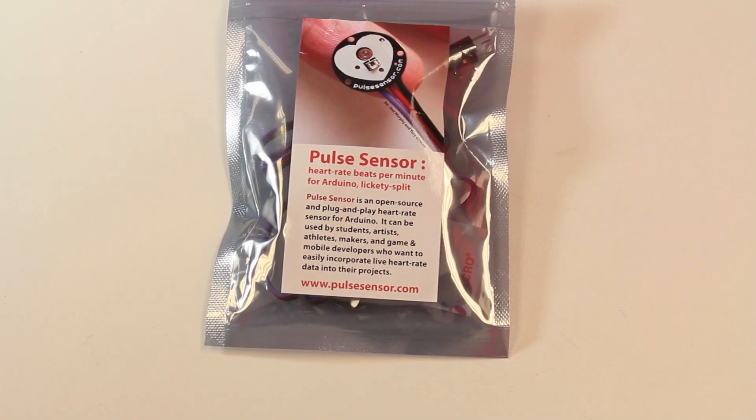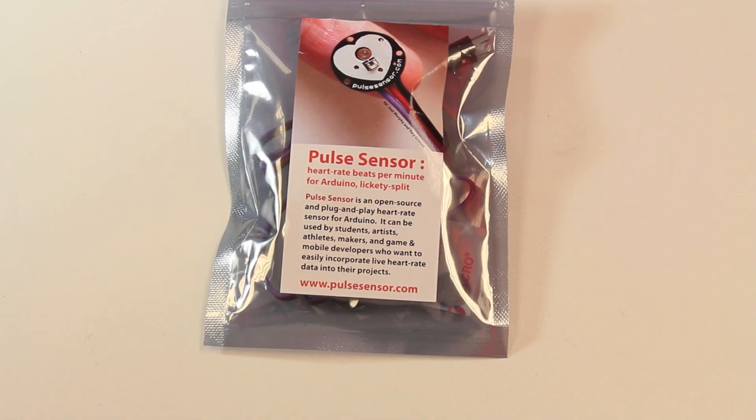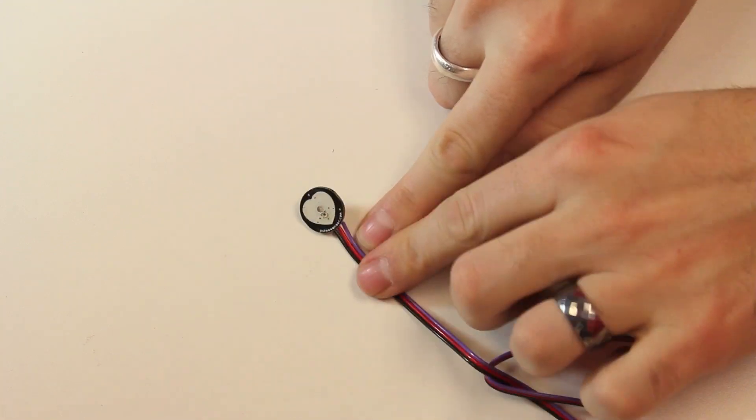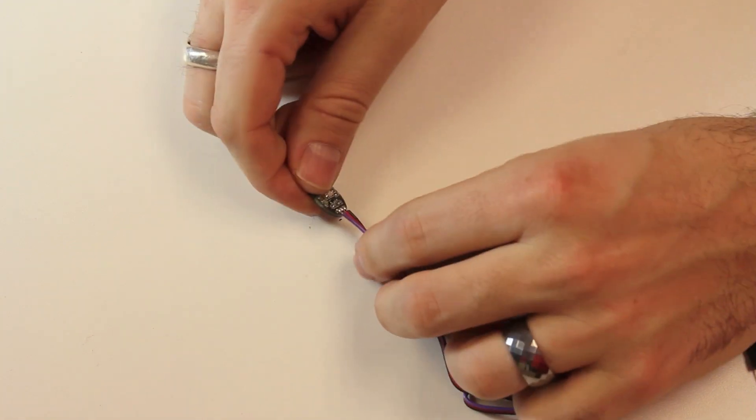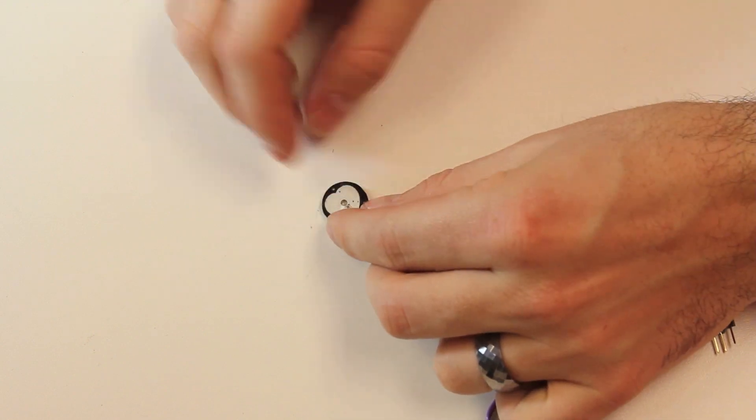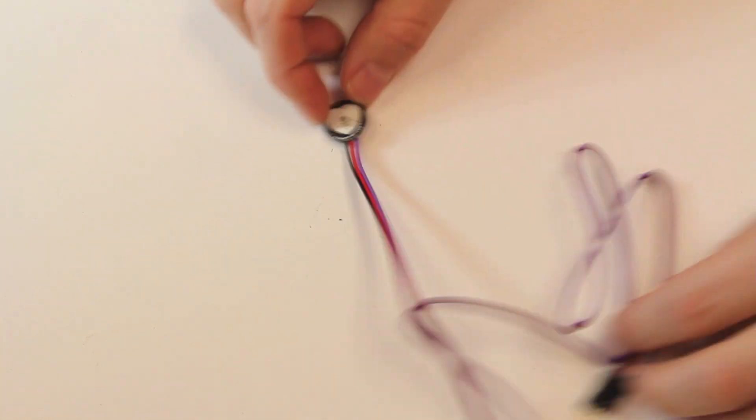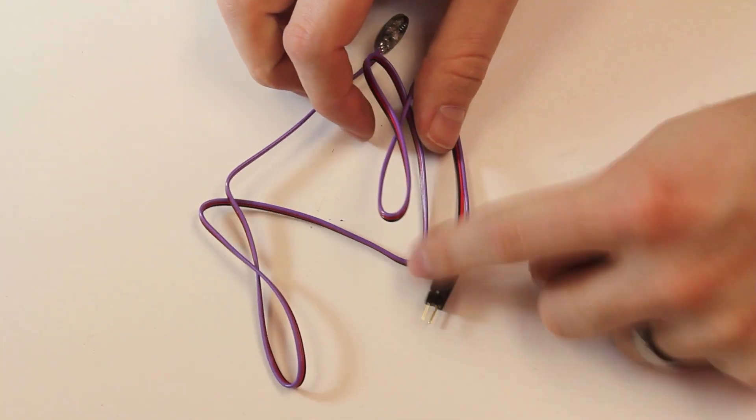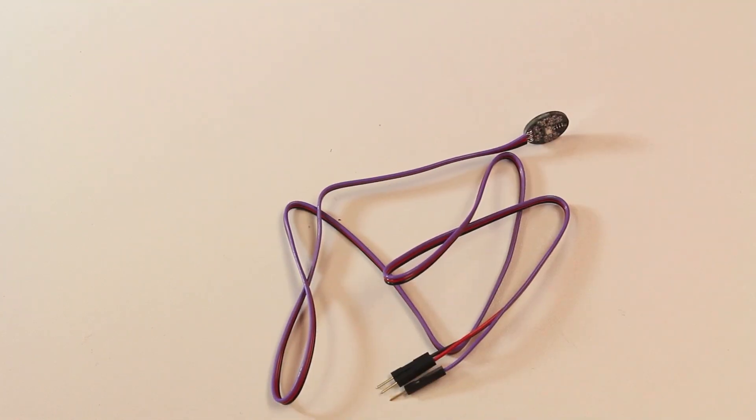First up, we've got the pulse sensor. The pulse sensor is exactly what it sounds like. It is a sensor for sensing your pulse. You can see it's just this little guy. It's got an LED on the backside and goes through the little hole. That goes against your finger, and then the whole thing is just terminated with these little jumper wire leads right there.